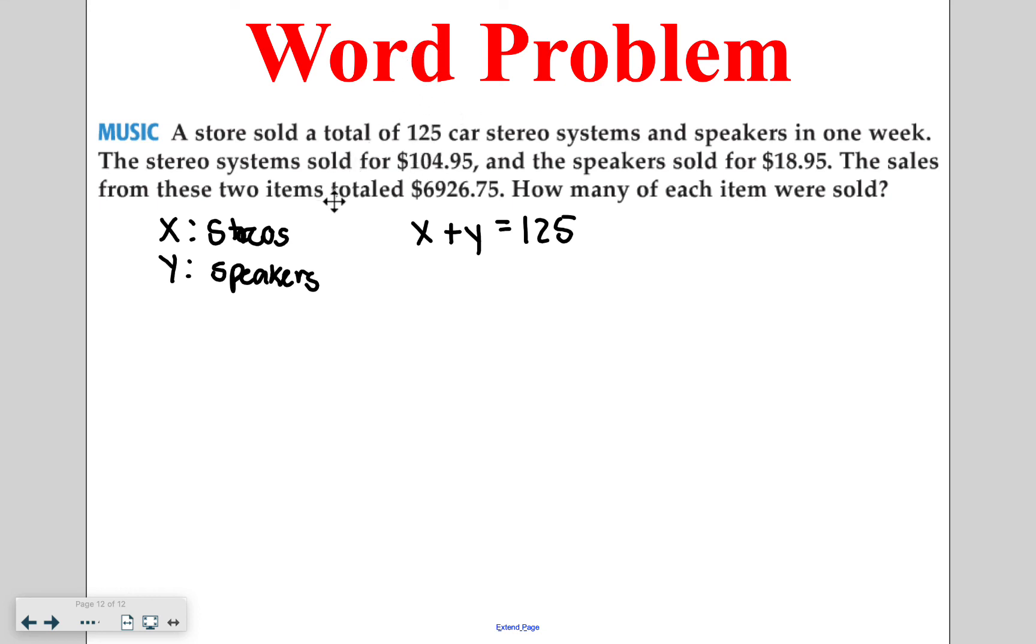So when I'm combining those, I know that my stereos plus my speakers means that there is 125 items together. That's what my first sentence indicated to me. My second sentence said that every time they sold a stereo, they made $104.95. So that's going to be $104.95x. That's how we show how much money they made from their stereos. They also, so adding, made $18.95 from each speaker. So that's $18.95y. And then your total amount of money that they gave to you was $6,926.75. So that's how you can break down the sentences to get your equations.